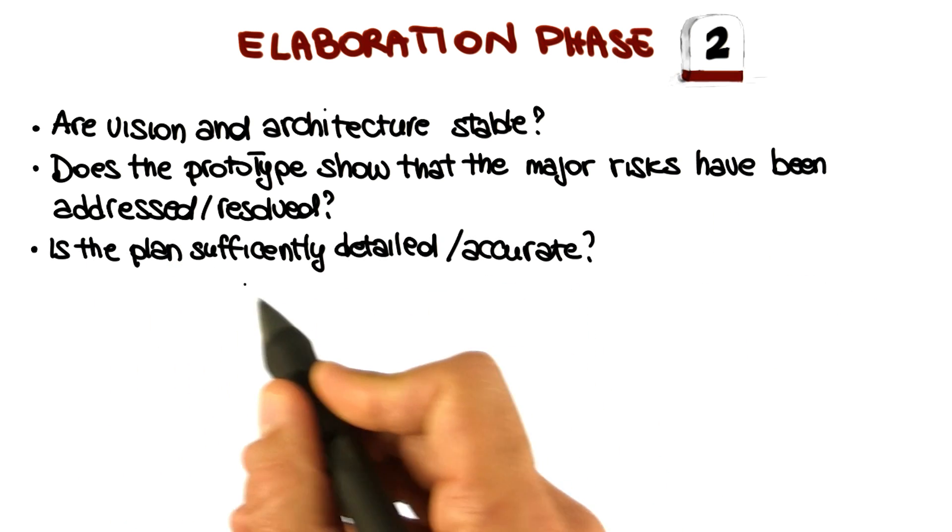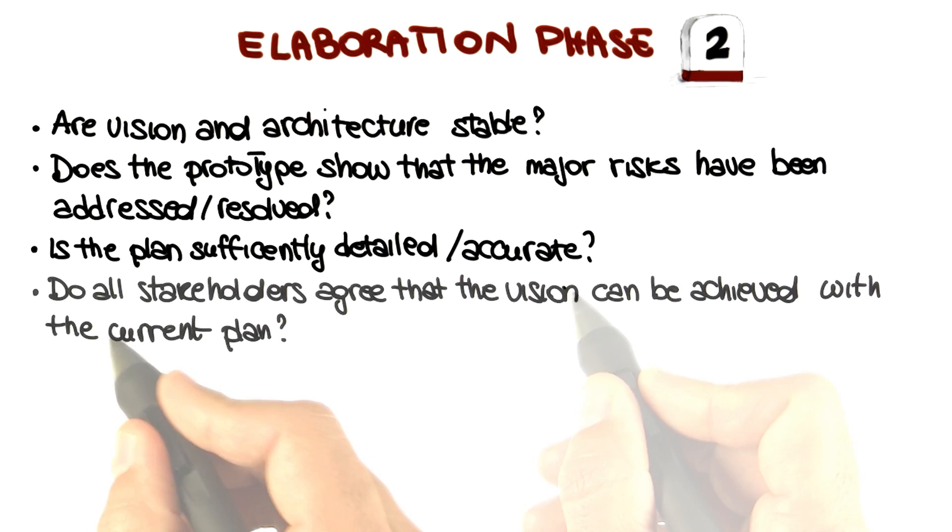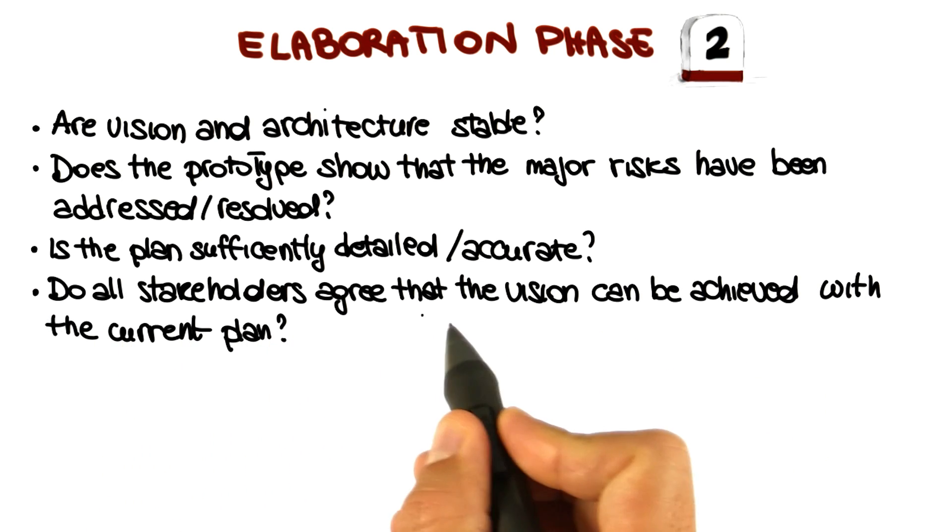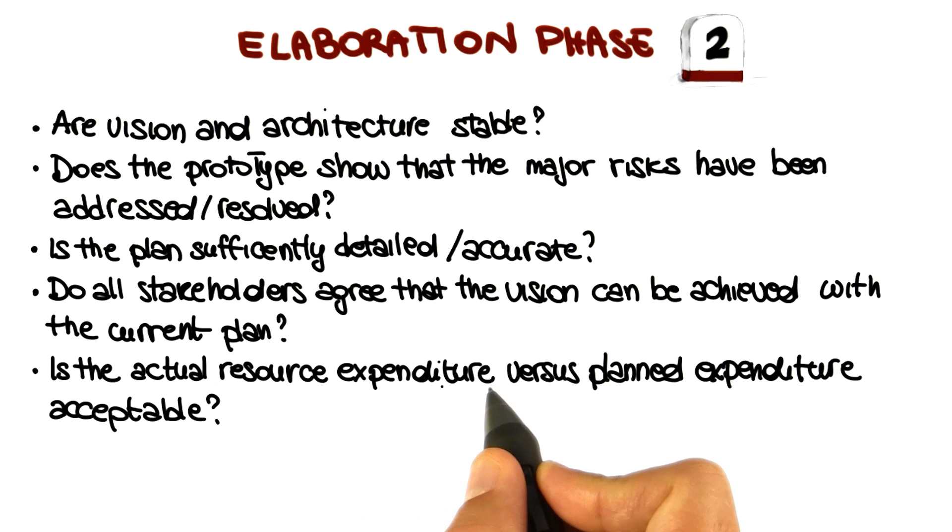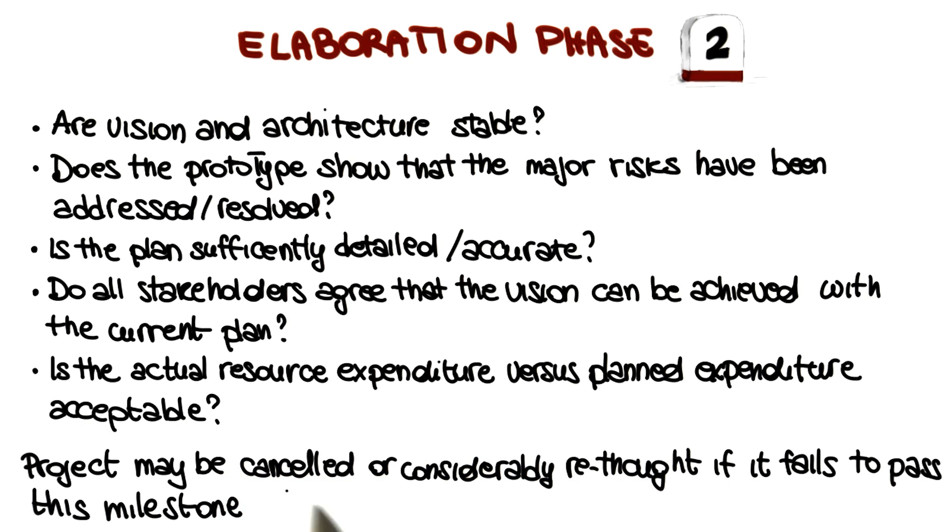Is the project plan sufficiently detailed and accurate? Do all stakeholders agree that the vision can be achieved with the current plan? Is the actual resource expenditure versus the planned expenditure acceptable? Now we started consuming resources and therefore we can check whether our estimates were correct. Also in this case, the project might be cancelled or considerably reshaped if it fails to pass this milestone.